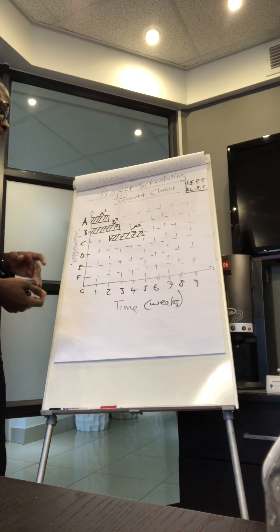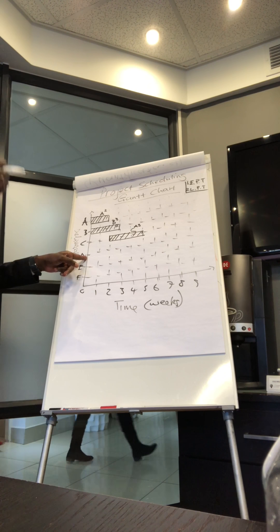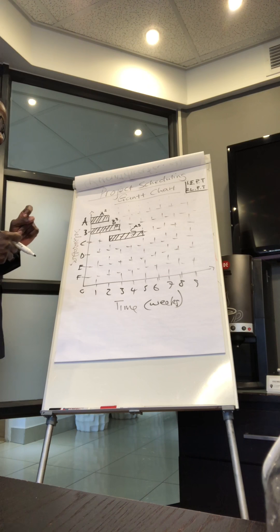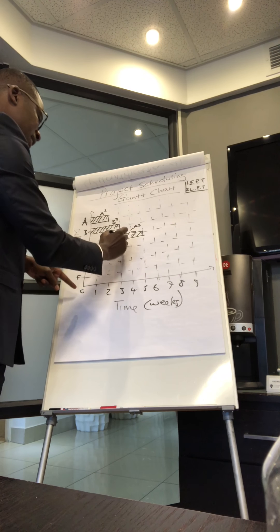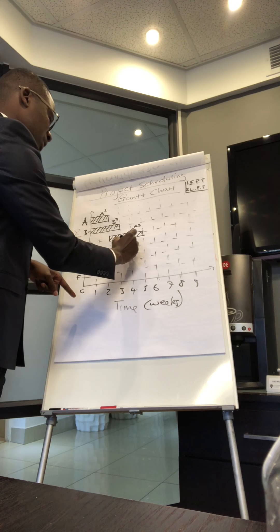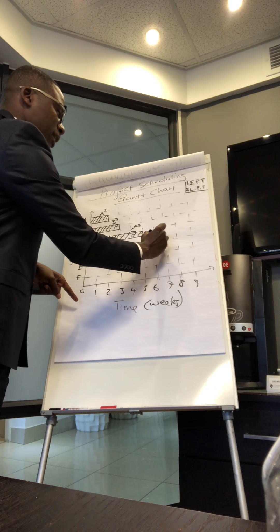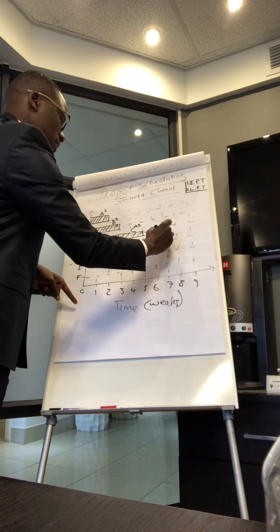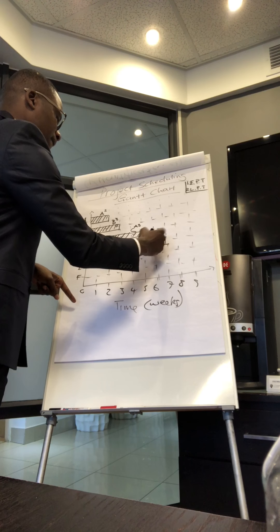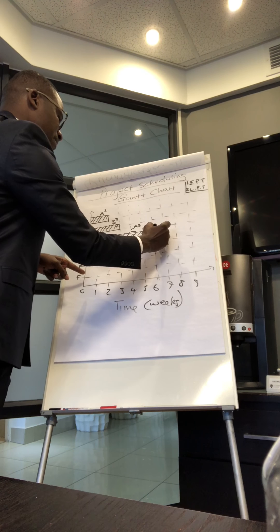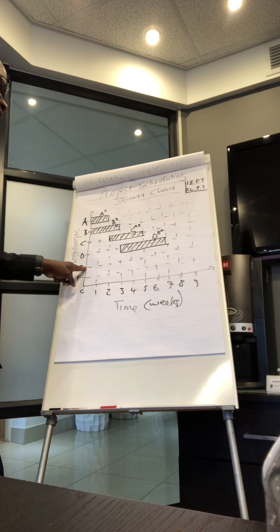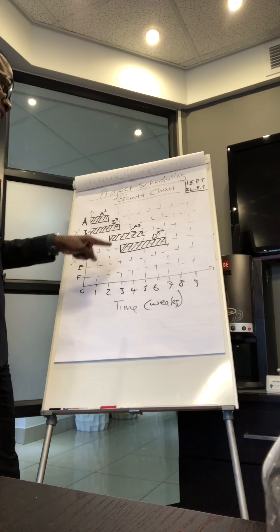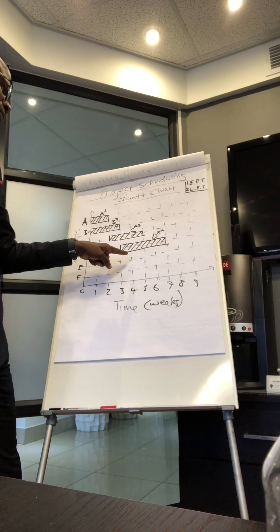Then Activity D, which cannot start until B is finished, takes four weeks. We start from where B ends, and draw four weeks from there. We record this as Activity D depending on B, taking four weeks.